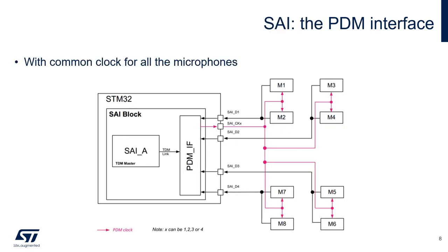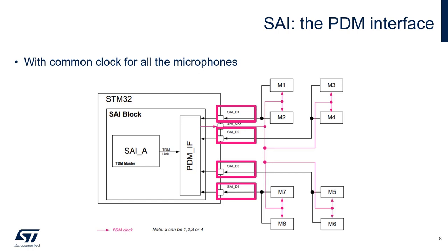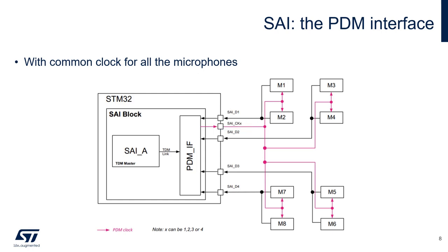Up to eight microphones can be connected to the PDM interface of the SAI peripheral. Each couple of microphones configured with opposite left-right pins share the same data line. The clock to the microphones can be common for all microphones allowing synchronized acquisition, or different for each pair of microphones.